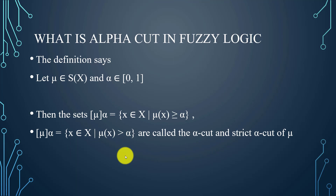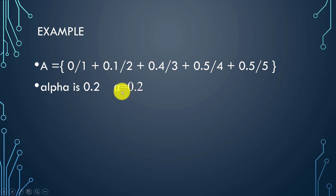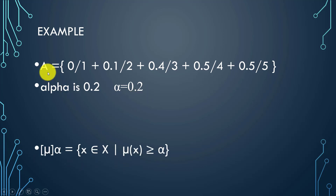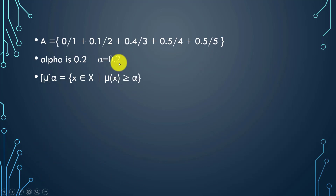Now let's understand this with an example. Consider set A with membership values: 0, 0.1, 0.4, 0.5, and 0.5. Suppose the alpha value is given as 0.2. To find the alpha cut of A, the condition is that mu of x must be greater than or equal to alpha. We know the alpha value is 0.2, and the condition is mu(x) ≥ alpha.